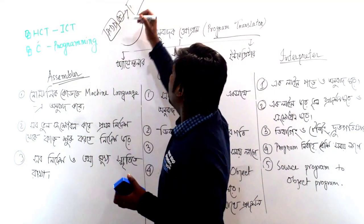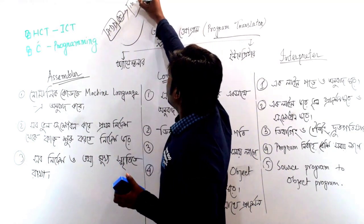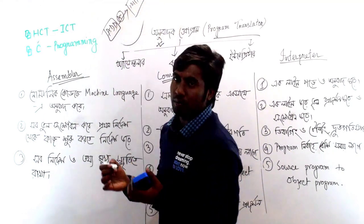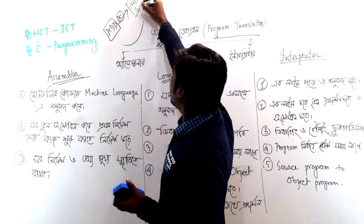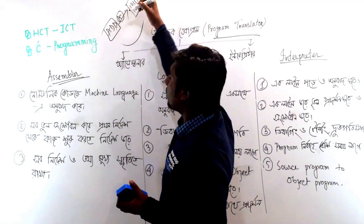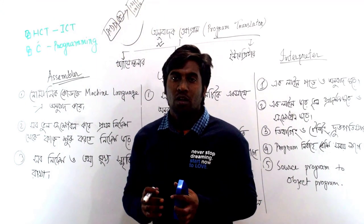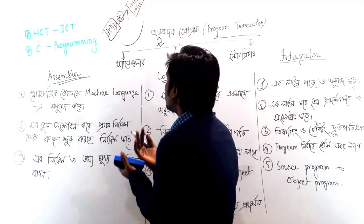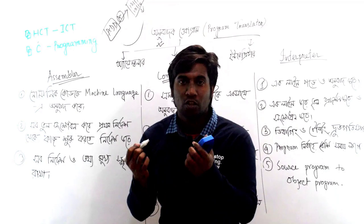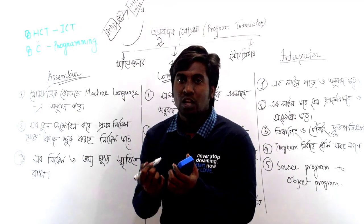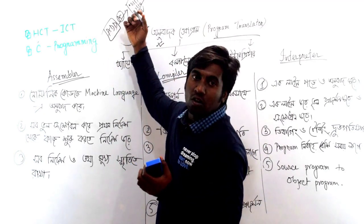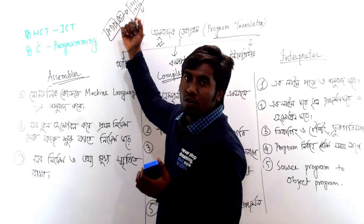Machine language runs as binary — zeros and ones. This is the language of the computer. The source program is converted to the object program in machine language.